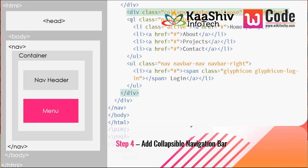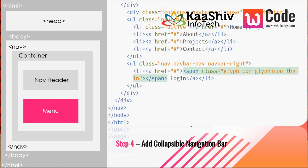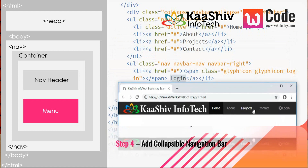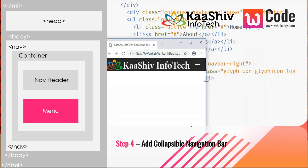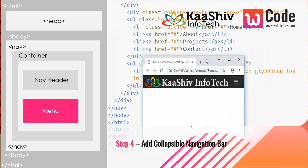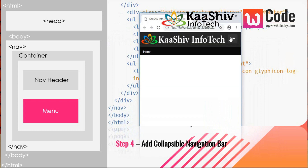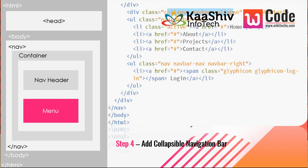I'm adding a collapsible menu with items: Home, About, Projects, and Contact in the li tags. On the right side I want a Login link with a glyph icon. The menu is collapsible — when you reduce the screen to mobile format, you see the collapsed icon, and on clicking it the menu expands and shows the list.